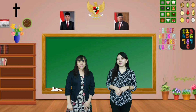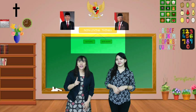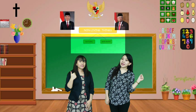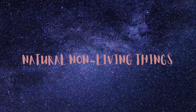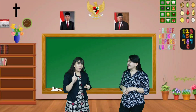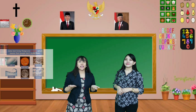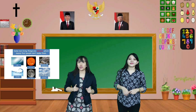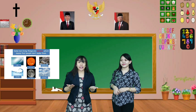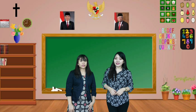Now let's talk about non-living things. Non-living things can be divided into two — they are natural and man-made. Can you explain about natural non-living things? Of course, yes. Some of the non-living things are natural, which means people cannot make them. Do you know examples of man-made non-living things?